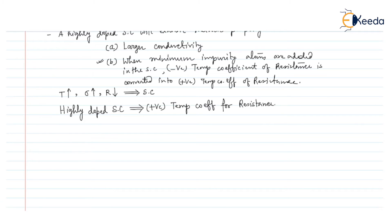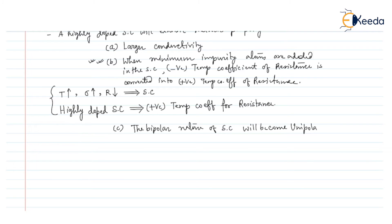The third property that can be seen in a highly doped semiconductor is that the bipolar nature of the semiconductor will become unipolar. From this context we can say that a highly doped semiconductor will behave as a conductor.